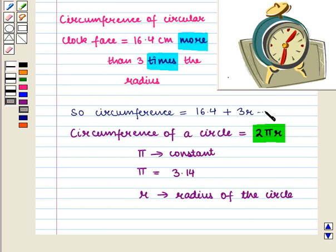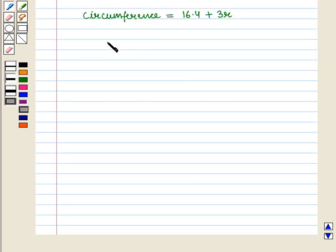Let us name this equation as equation number 1. Now we will put the value of circumference, i.e. 2πR, in this equation. We get 2πR is equal to 16.4 plus 3R.